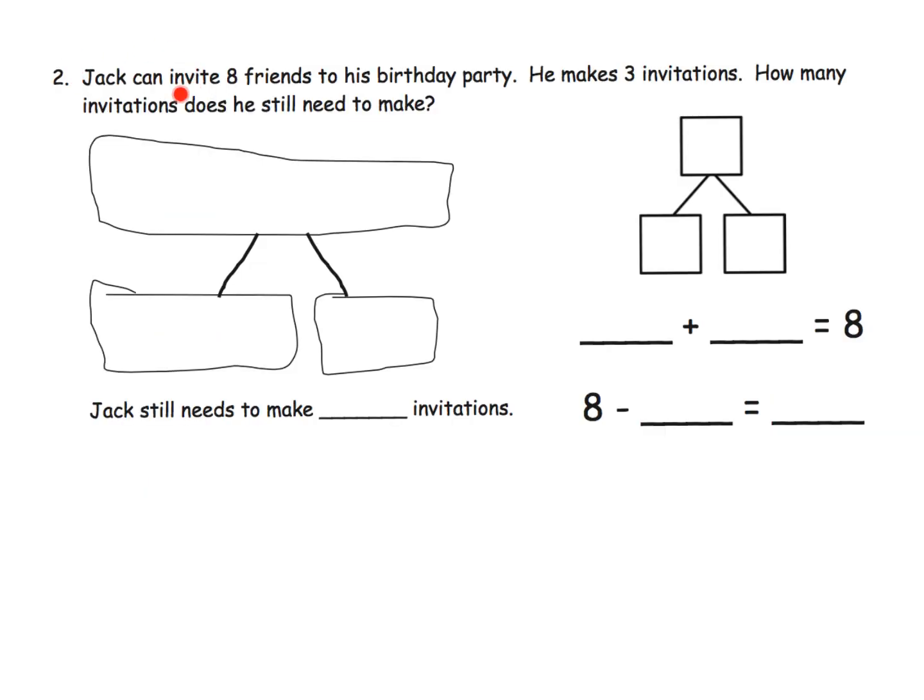So here it says Jack can invite eight friends to his birthday party. He makes three invitations. How many invitations does he still need to make? And for some reason, I kind of feel like we're taking a little bit of a step backwards because they're implying they want us to model it in the number bond with dots rather than numbers. So we'll do that.